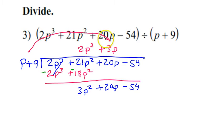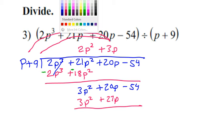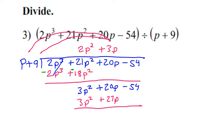Then I take my 3P and I do the distributive property with it. So 3P times P is going to give me 3P squared. 3P times 9 is going to give me 27P. And now I have to change the signs.